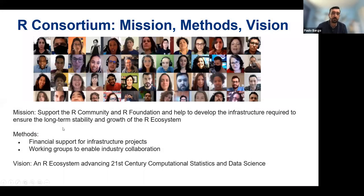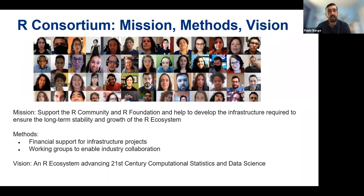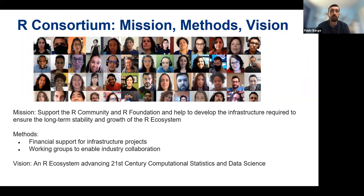The R Consortium has a mission to support the R community and the R Foundation, and to help develop the infrastructure required to ensure the long-term stability and growth of the R ecosystem. We do that through financial support to infrastructure projects and working groups to enable industry collaboration. There are several working groups currently active: R-Ladies, the R Validation Hub, and the R Adoption Series.